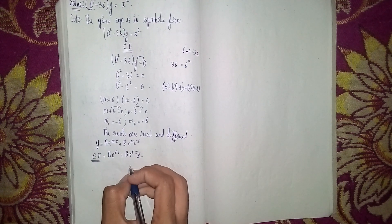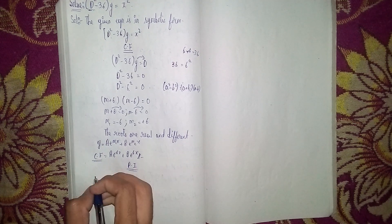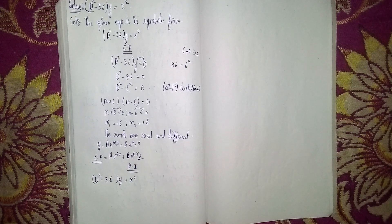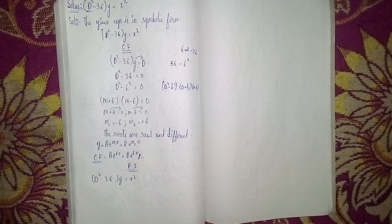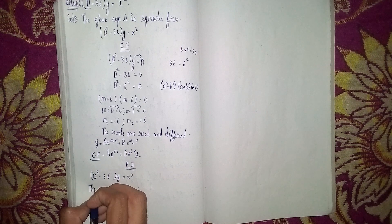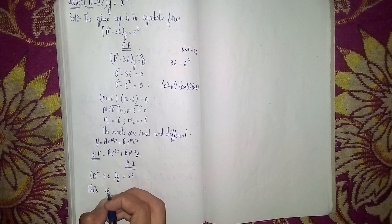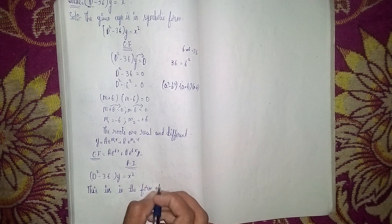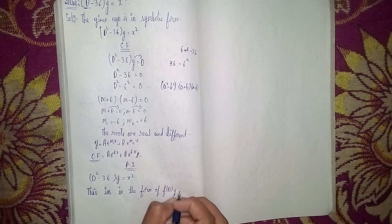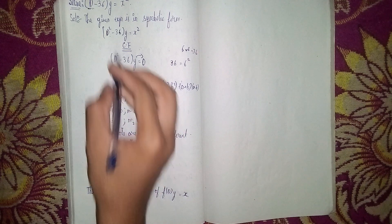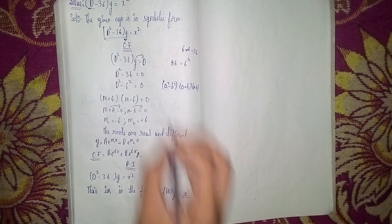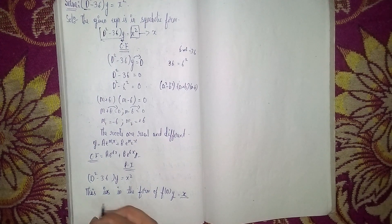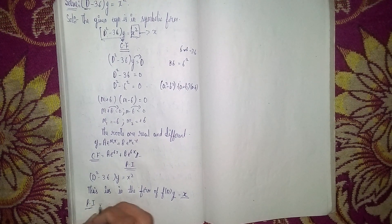That completes step 1. Now step 2 is to find the particular integral (PI). Write the equation: (D² - 36)y = x². This is in the form F(D)·y = X, where F(D) is D² - 36 and X is x². So PI = X / F(D) = x² / (D² - 36).